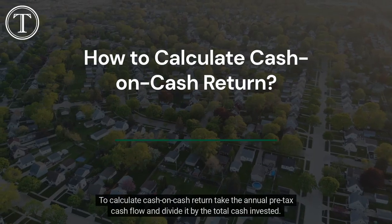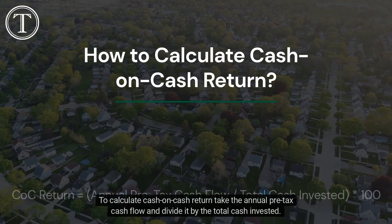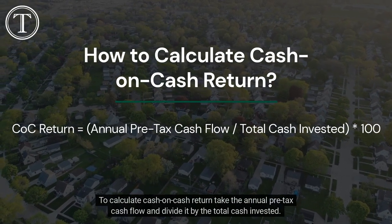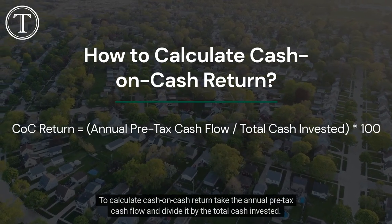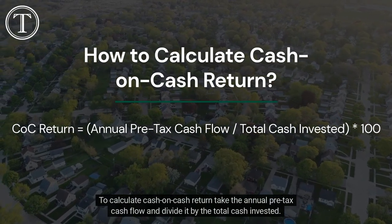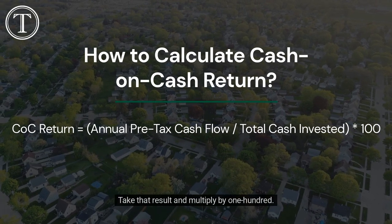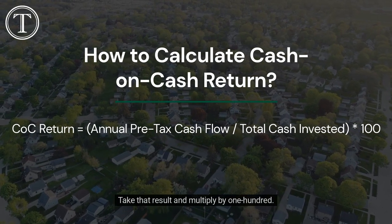To calculate cash-on-cash return, take the annual pre-tax cash flow and divide it by the total cash invested. Take that result and multiply by 100.